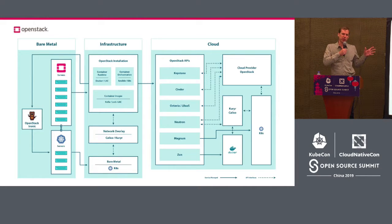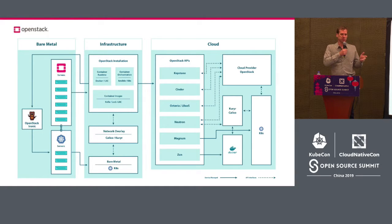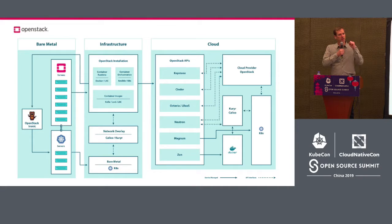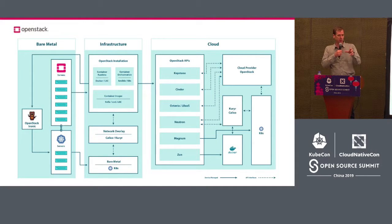Looking at the ways OpenStack and Kubernetes interact — at the bottom of the stack we manage bare metal infrastructure with OpenStack Ironic, either as part of a full micro OpenStack cloud or as a standalone service to provision your bare metal servers and either provision OpenStack or Kubernetes on top of that. Then you have your infrastructure layer where you might have an OpenStack installation, a Kubernetes installation, or both, connected with projects like OpenStack Kuryr to bridge the networking between those layers.